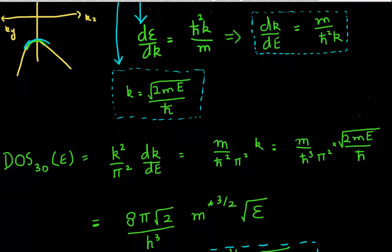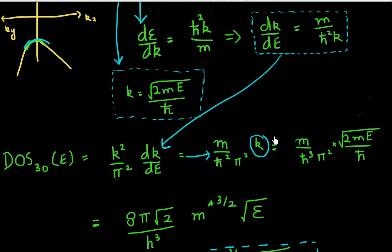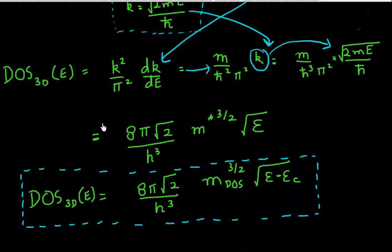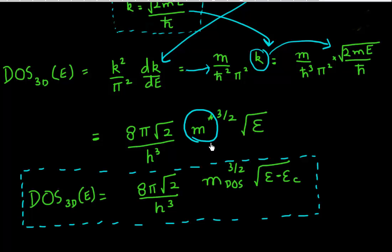Substituting dk/dE into the density of states expression and then replacing k in terms of energy, I get the final relationship: density of states is proportional to m* and to the square root of energy. This is quite an interesting result. The mass m* here is called the density of state mass, and I can further write the energy referenced to the conduction band edge.